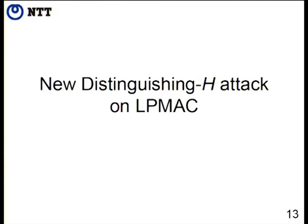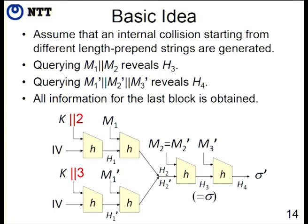I'd like to explain the attack procedure. Here is the basic idea. First, assume that an internal collision starting from different length-prepend strings can be generated. The attacker queries a two-block message M1, M2 and obtains the corresponding tag sigma. Because the block length is two, computation starts from the beginning, and after the first block it will reach an internal collision. For another message block, it will reach sigma. Then he queries three-block messages — because the block length is three, computation starts here, and after the first block is computed, it reaches the internal collision.